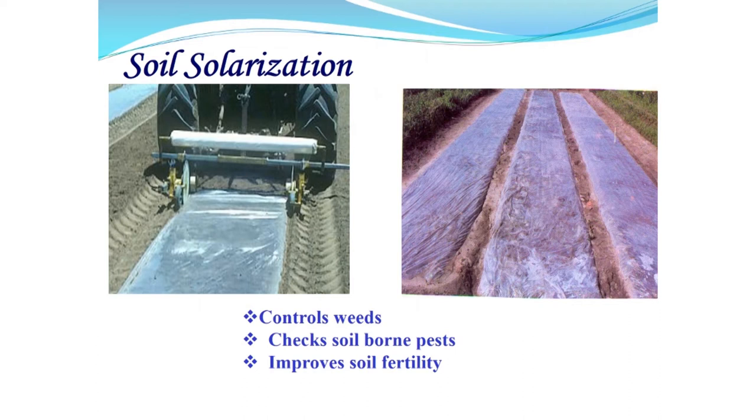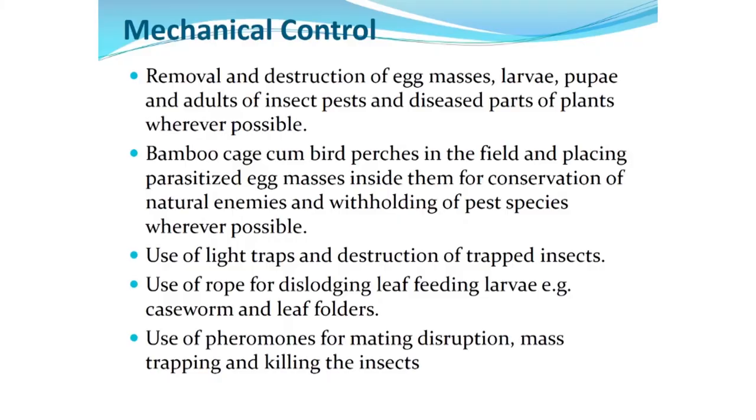Soil solarization is also effective in controlling weeds, checking soil-borne pests, and improving soil fertility. The next method is mechanical control — wherever insects are clearly visible on plants and plant symptoms are visible, those plants and plant parts are destroyed to prevent spread of diseases and pests. Mechanical control includes removal and destruction of various stages of insects such as egg masses, big larvae, pupae, and adults of insect pests, as well as diseased parts of plants wherever possible.